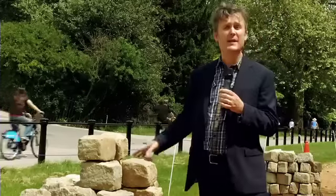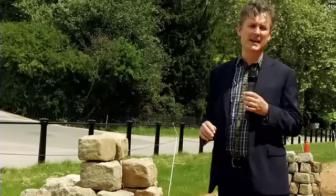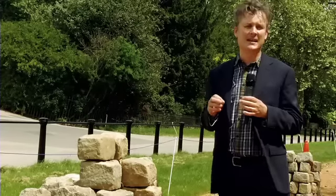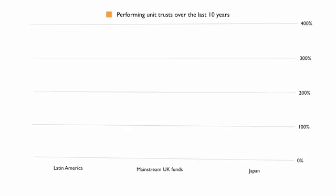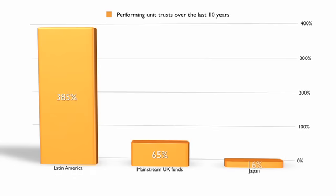If he or she does a good job then the unit price should rise over the long term. But do bear in mind that investment returns can vary widely, particularly if you're investing overseas. For example, the best performing unit trusts over the past 10 years have been invested in Latin America, where they've generated an average return of 385%. By contrast, mainstream UK funds have generated just 65% on average in that time, while funds invested in Japan have chalked up just 16%, which is below inflation.